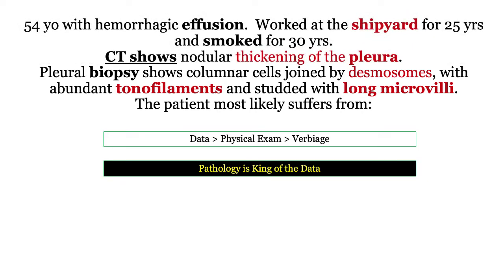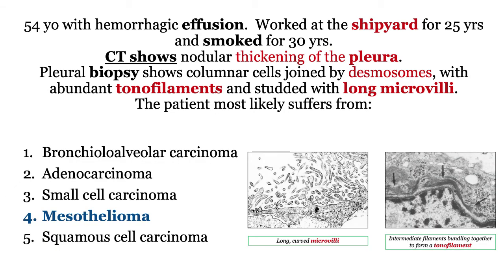So what does the pathology tell us? Columnar cells joined by desmosomes with abundant tonofilaments and long microvilli — game, set, match. This is the pathology of mesothelioma. Even if you didn't recognize that, it is not the pathology of the other tumors. You need to know the pathologic descriptions of all tumors mentioned. The take-home: pleural disease, tonofilaments, and microvilli are inconsistent with the other tumors and represent the characteristic combination of findings in mesothelioma.